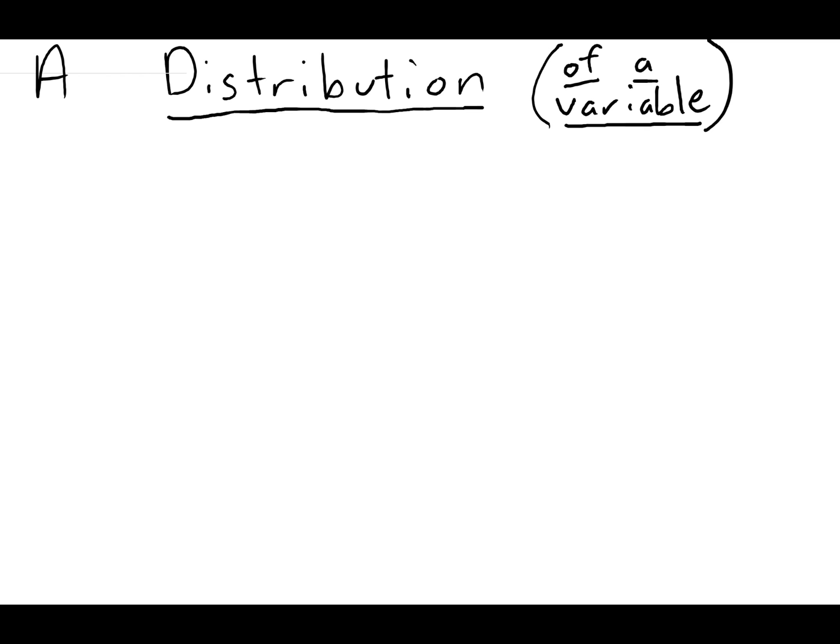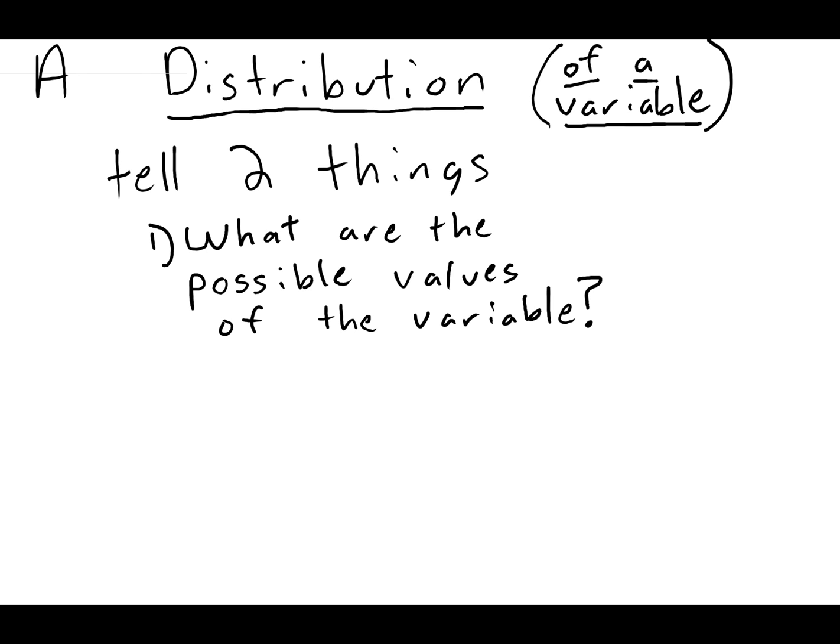If you remember, we said that variables are measurable characteristics of something that aren't always the same, like the height of people varies from person to person, so we call height a variable. So variables have distributions, and distributions tell us two things. The first thing is what values that variable can take on, and the second is how often it takes on each of those possible values.